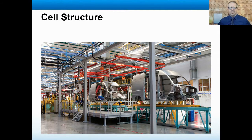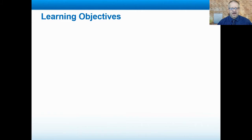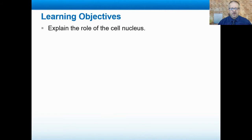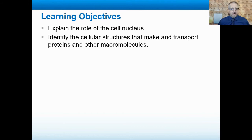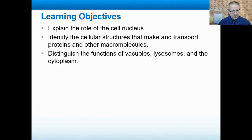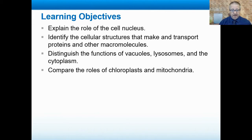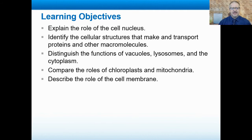Alright, today we look at cell structure, and our desired results, a.k.a. learning objectives, are that you should be able to explain the role of the cell nucleus. You should also be able to identify the cellular structures that make and transport proteins and other macromolecules. You should also be able to distinguish the functions of vacuoles, lysosomes, and the cytoplasm, and compare the roles of chloroplasts and mitochondria. Lastly, you should be able to describe the role of a cell membrane.